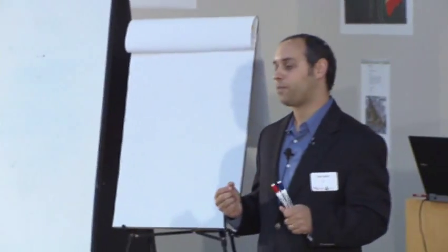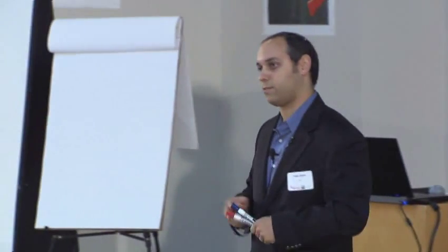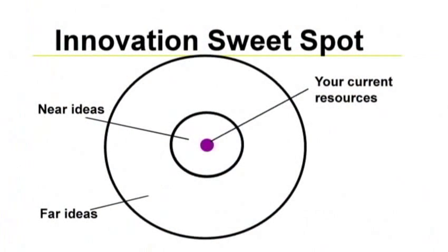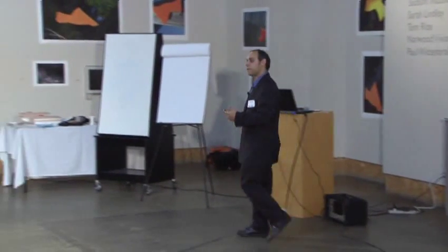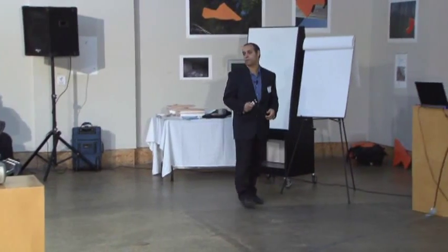Brainstorming started emerging in different places with different people at that time. They started developing a method to make sure to break free and get to the really innovative products or really innovative ideas. In brainstorming you want a lot of ideas. Statistically, if you have a lot of different ideas, you'll probably have some gems in there. Because of the rules of brainstorming, you find that you're very successful in breaking free of the near ideas. However, what the research has shown in recent years is that usually in a brainstorming process you get a little bit too far — you get to some really silly, out-there, wacky ideas.